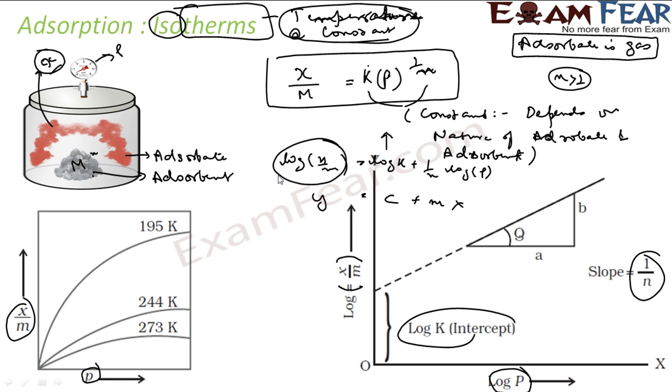So if we compare this equation with y equals mx plus c, you will see that my c is nothing but log k. This becomes my c, my intercept. And slope is m, and slope is nothing but 1 by n. If you compare this equation, slope becomes 1 by n, x becomes my log p, and y becomes my log x by m. This is the graph problem. And these are all experimental values.